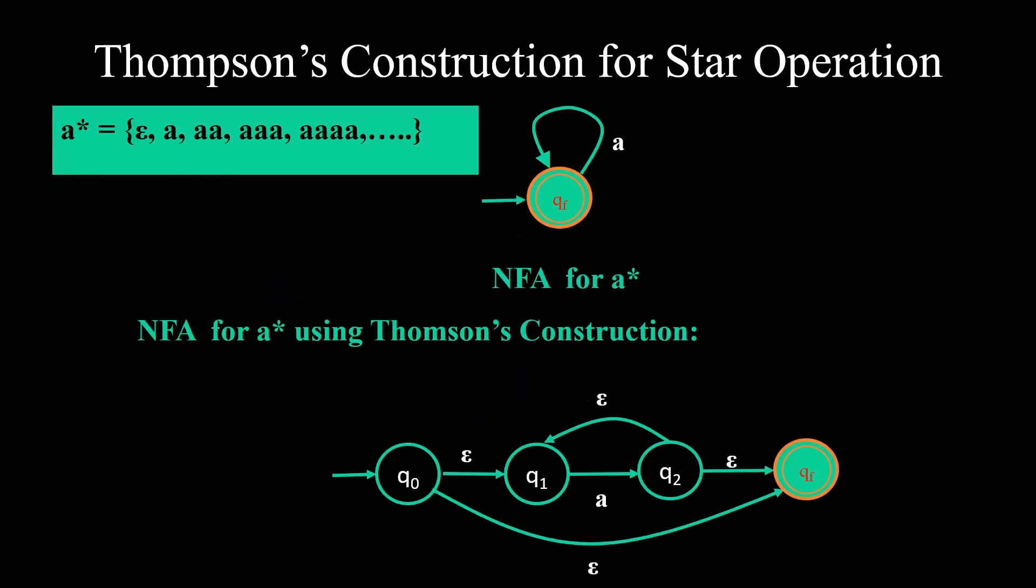Now just see how star operation is performed. Say for example, I have an NFA for a* which is given here. What does a* actually mean? That means a ranging from 0 up to infinity. 0 means epsilon, single a, double a, 3a, 4a and so on.